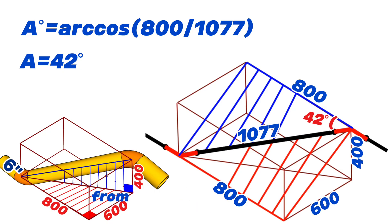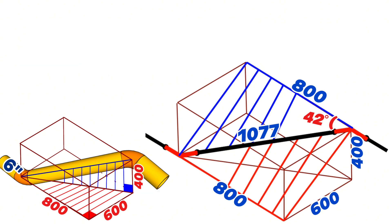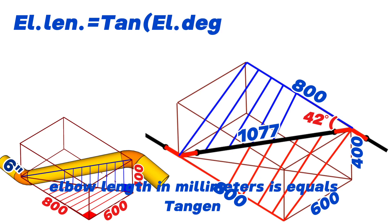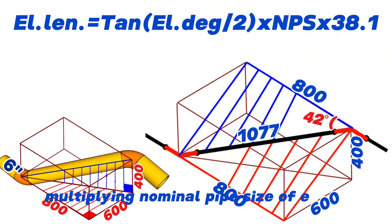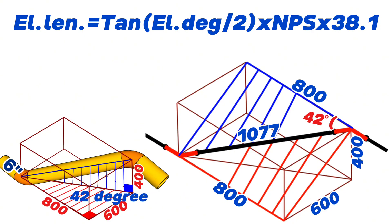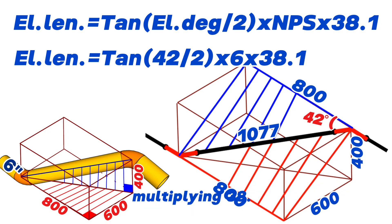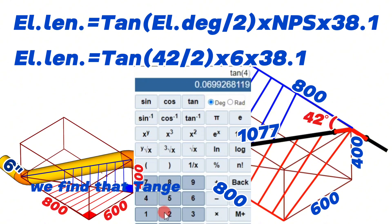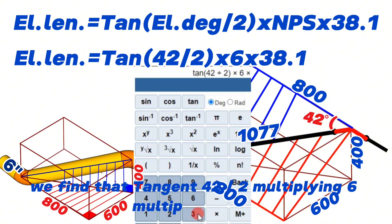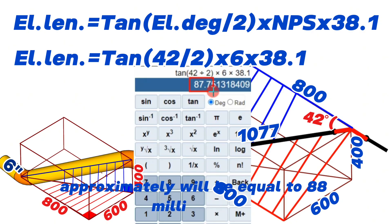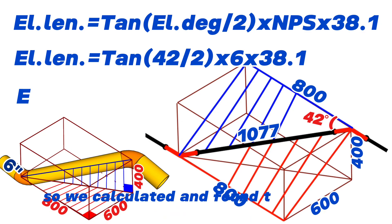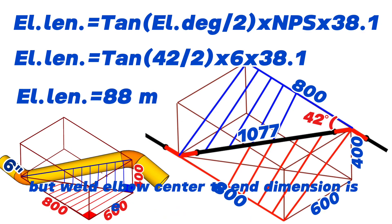Now let's calculate the center-to-end dimension of the cut elbows. The formula is: elbow length in millimeters equals tangent of (elbow degree divided by 2), multiplied by the nominal pipe size (NPS), multiplied by 38.1. For a 6-inch 42-degree butt-weld elbow: center-to-end dimension equals tangent(42/2) × 6 × 38.1. Using the scientific calculator, this equals approximately 88 millimeters. So the 6-inch 42-degree butt-weld elbow center-to-end dimension is 88mm.